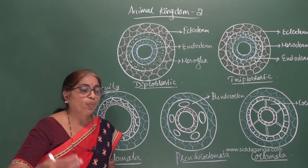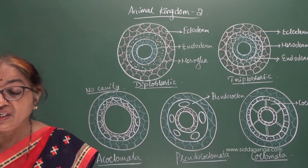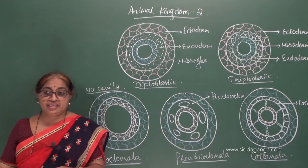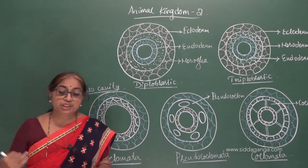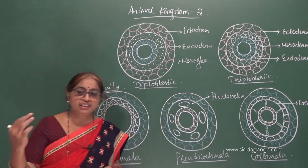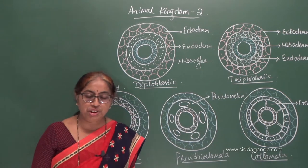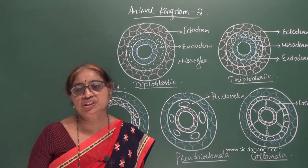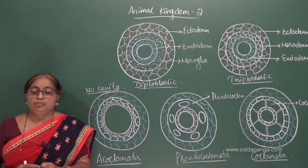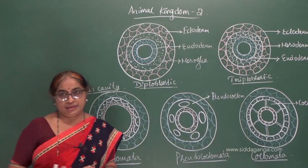We are doing a quick revision of what we studied in the last class. The complete digestive system comprises two openings: one for ingestion of food — the mouth — and the other for egestion of undigested waste — the anus. That body plan is called the tube-within-tube plan.